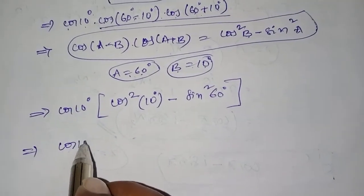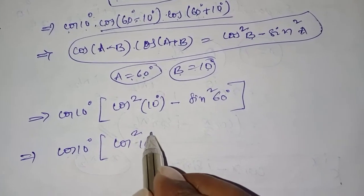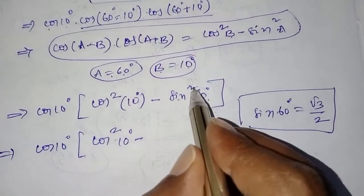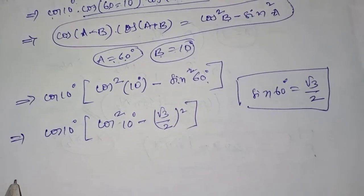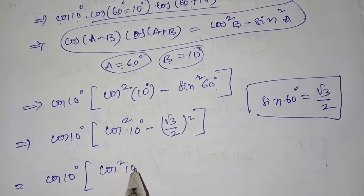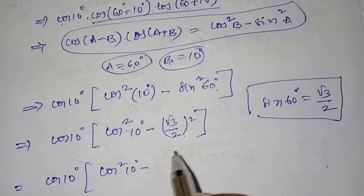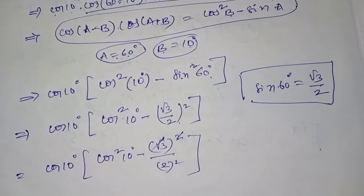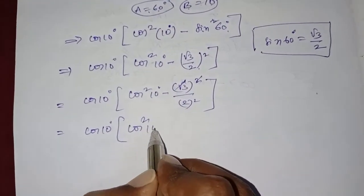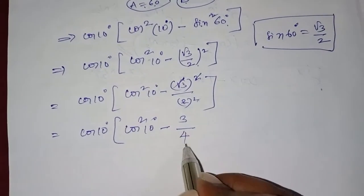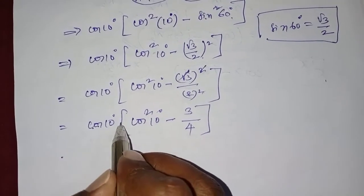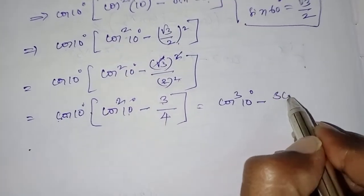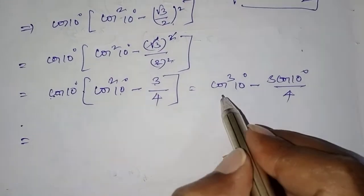That equals cos 10 degrees into cos squared 10 degrees minus sin squared 60 degrees. Sin 60 degrees equals root 3 by 2, and here we have it squared, so root 3 by 2 whole squared gives 3 by 4. So this becomes cos 10 degrees into cos squared 10 degrees minus 3 by 4. Multiplying through: cos cubed 10 degrees minus 3 cos 10 degrees by 4.